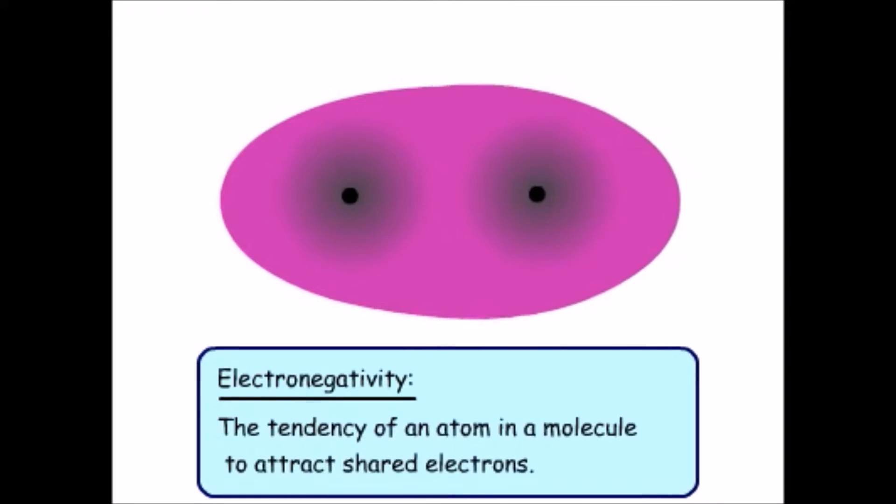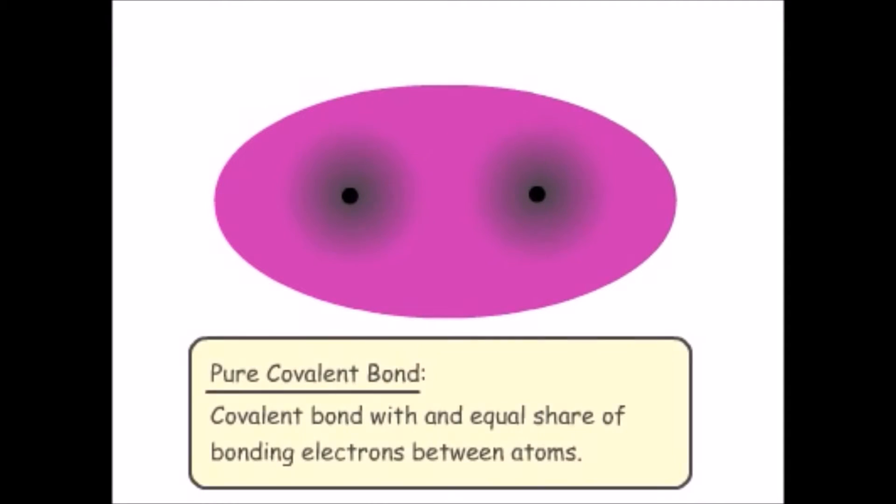In order for two covalently bonded atoms to share the electrons of the bond equally, the two atoms have to be identical. A bond between atoms that share their bonding electrons equally is called a pure covalent bond.